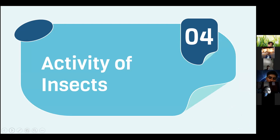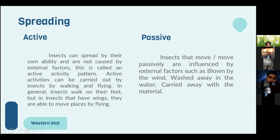The next topic is the activity of insects. The first is dispersal, divided into active and passive. Insects that spread by their own ability, not influenced by external factors, show an active activity pattern. Active dispersal can be carried out by walking and flying — most insects walk, but those with wings are able to move by flying. Passive dispersal is influenced by external factors such as being blown by the wind, washed away by water, or carried by materials.